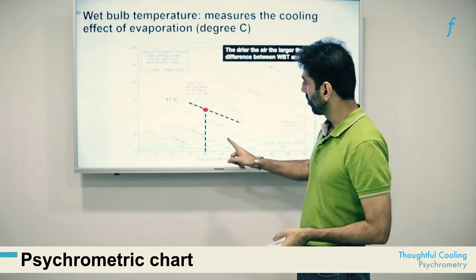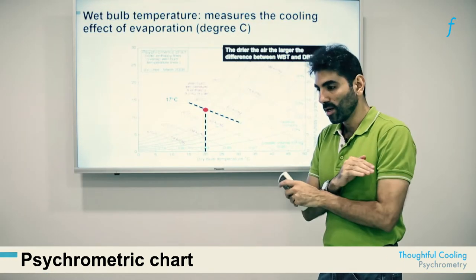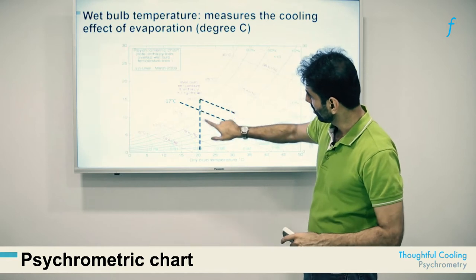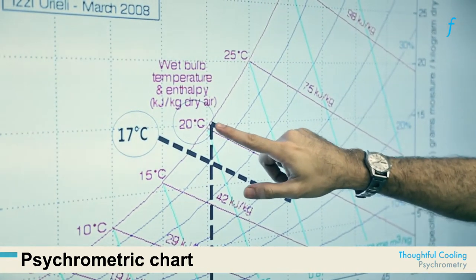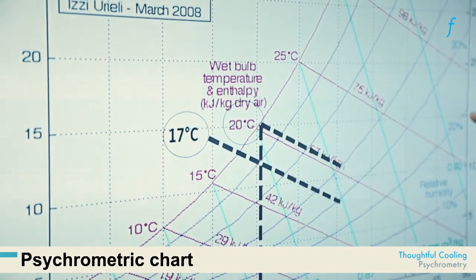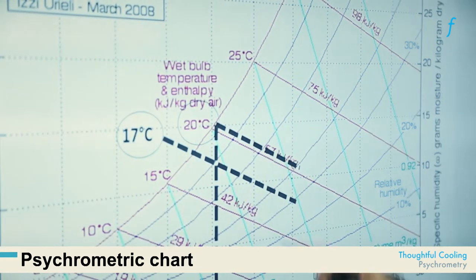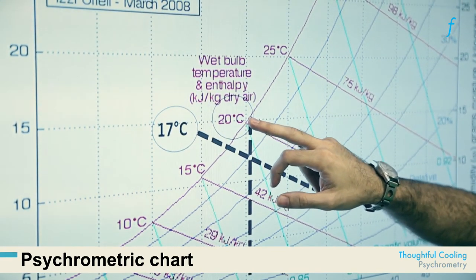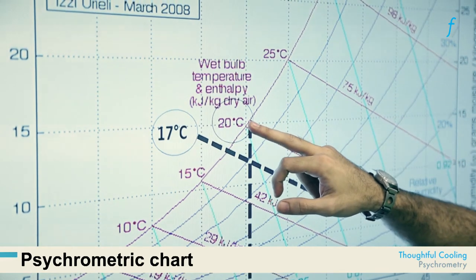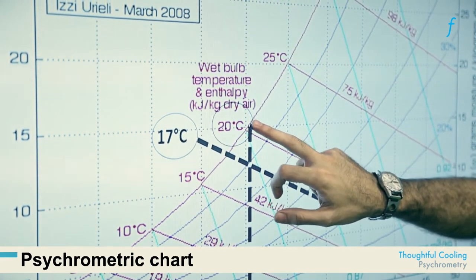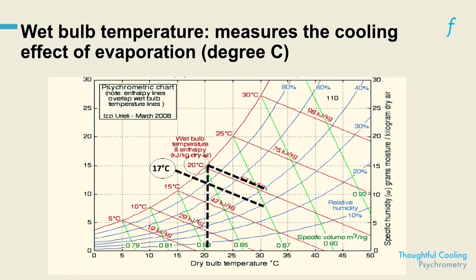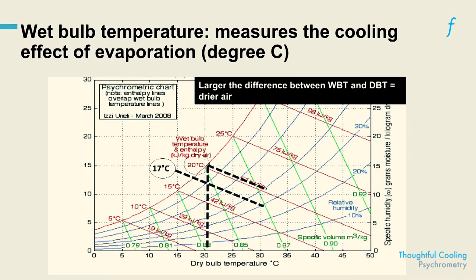This emphasizes the point: the drier the air, the greater the difference between dry bulb and wet bulb temperature; the wetter the air, the lesser the difference. This is true for any part of the psychrometric chart.